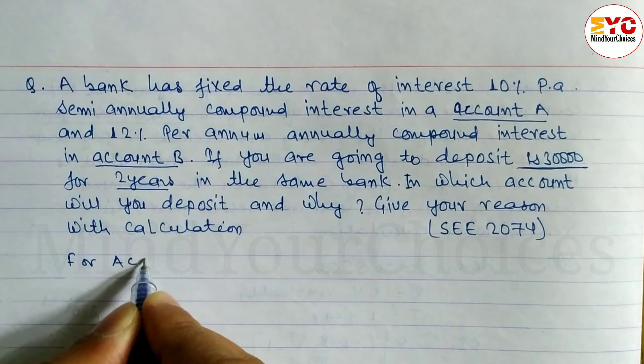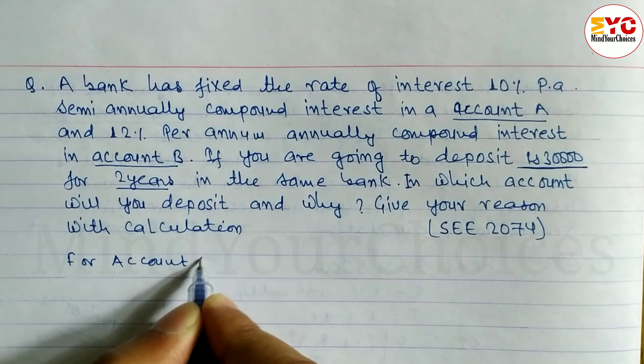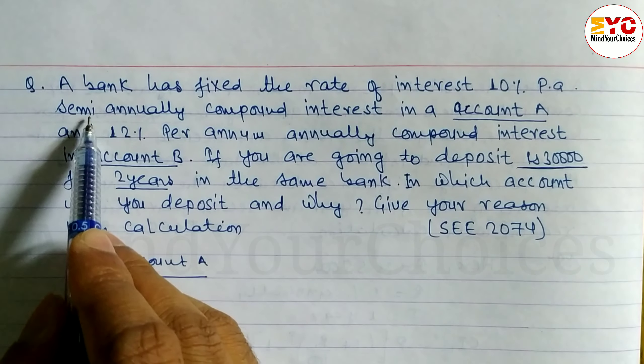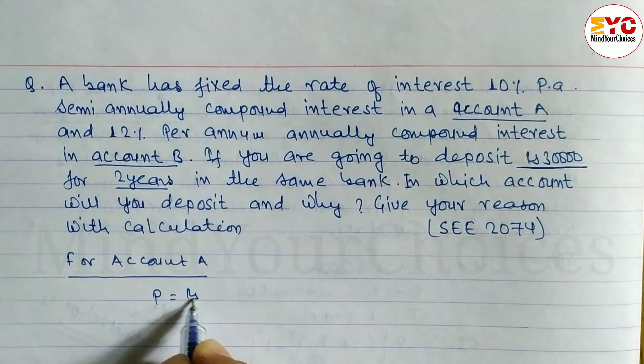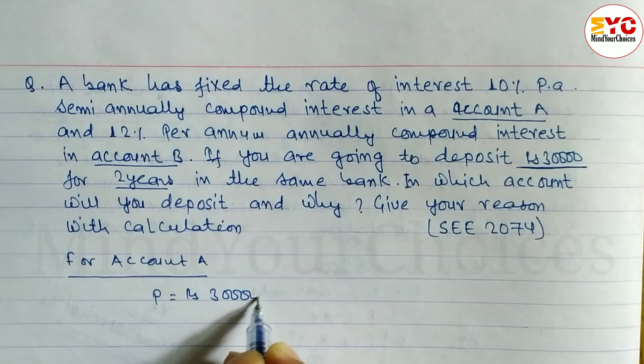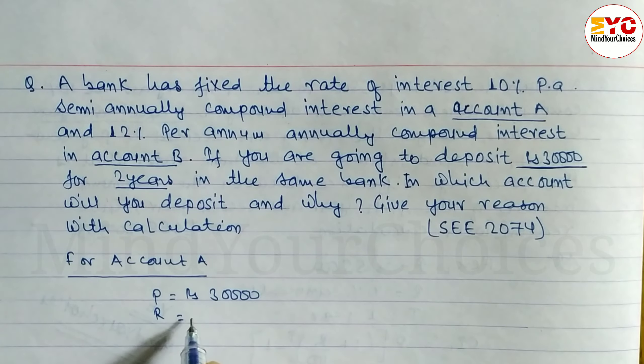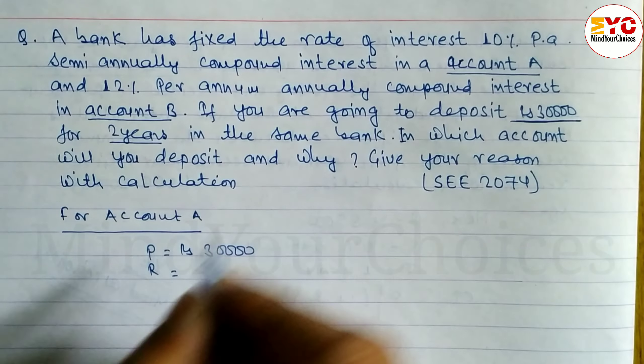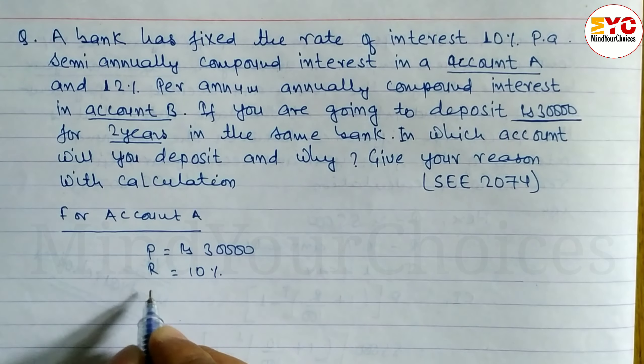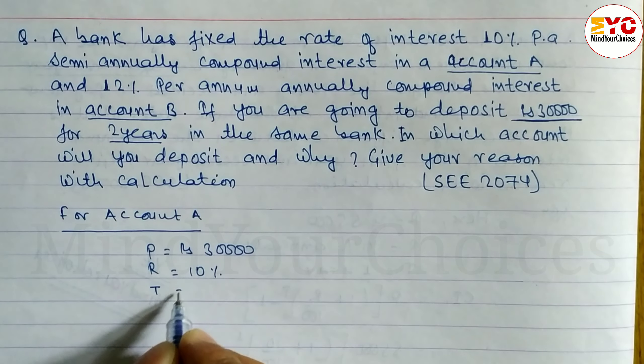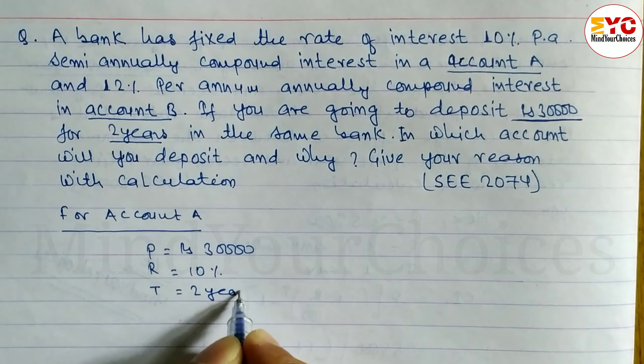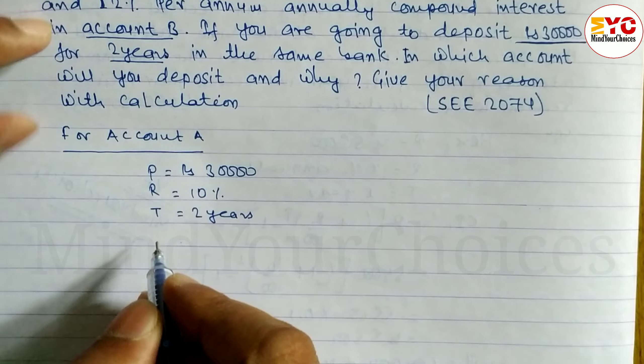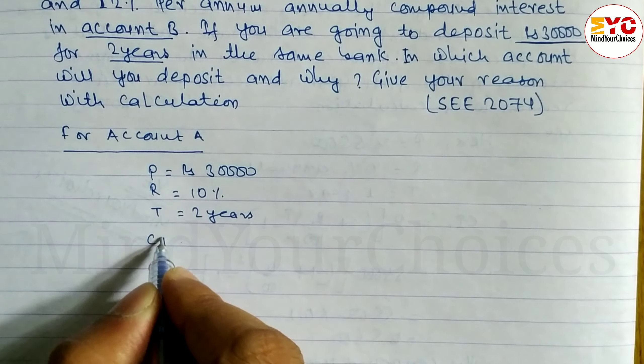For account A, account A is semi-annually. So here P is equal to rupees 30,000. Rate R is equal to 10% for account A. Time is equal to 2 years. Time 2 years for both account A and account B.